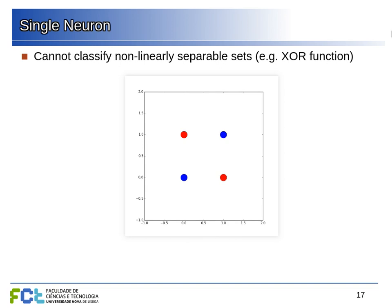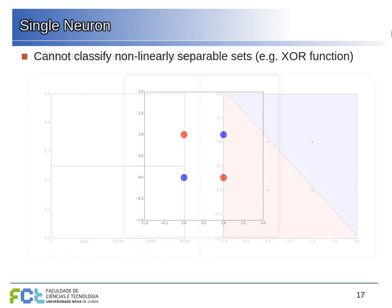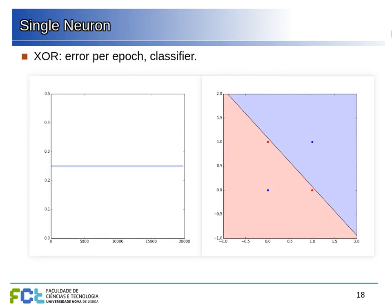Now consider the exclusive OR function: when both inputs are true it gives false. This is a classic example of something that is not linearly separable — there is no straight line that can separate red from blue. If we try to train our neuron on this, we get a disappointing result: the neuron doesn't learn anything. The quadratic error stays at 0.25, which is the square of 0.5, meaning an average error of 0.5. There is no way it can correctly classify all these points.